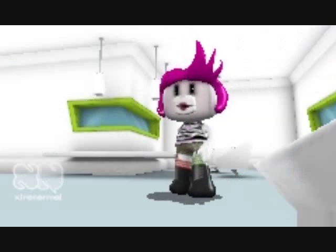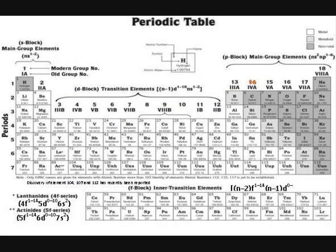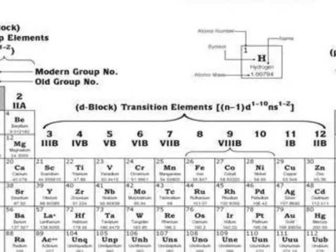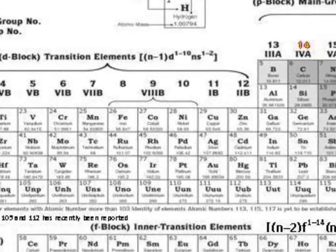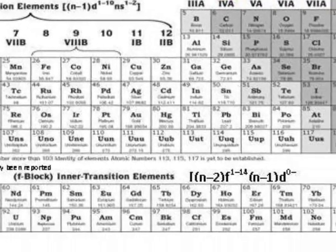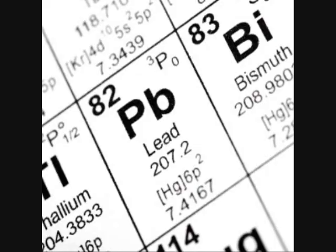Lead's symbol, Pb, can be found in group 14, period 6, on the periodic table. When looking at the periodic table, you will find that its atomic number is 82, and its atomic mass is 207.2.